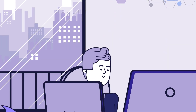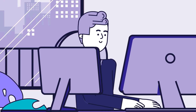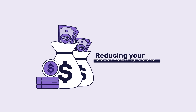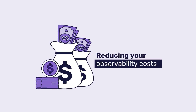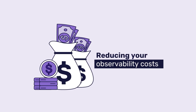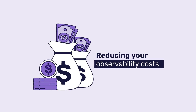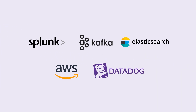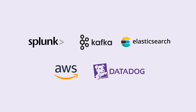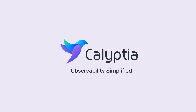With the Calyptia Core dashboard's drag-and-drop approach, you're able to filter out noisy or irrelevant data, significantly reducing your observability costs. And with destinations like Splunk and Datadog, your team can leverage only the data that you need. Calyptia is observability simplified.